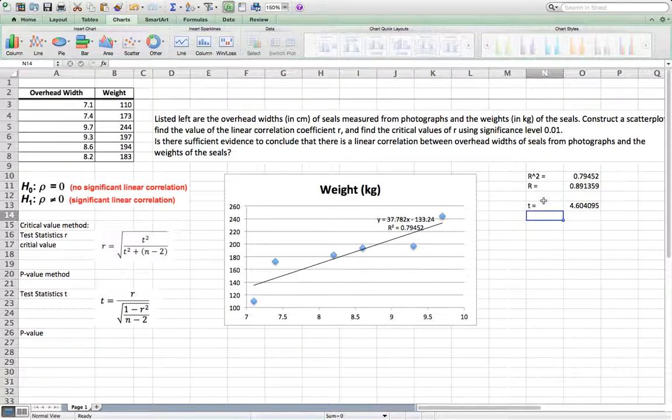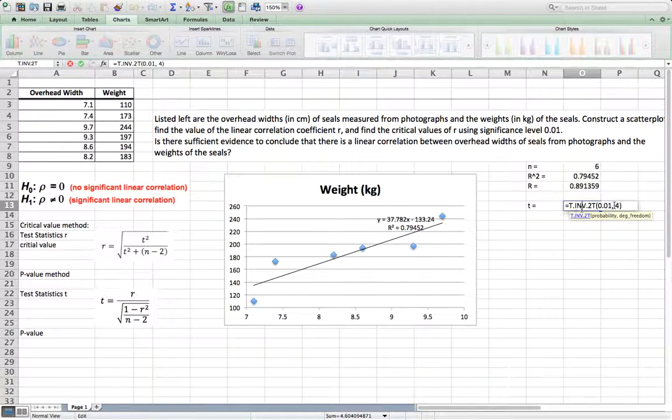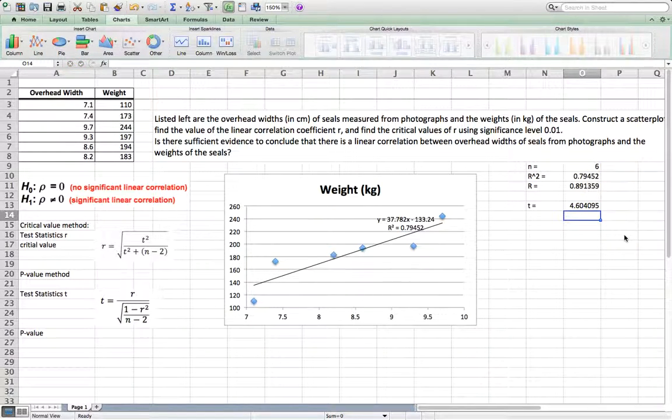Now, in order to make it more professional, maybe we can say that we let n equal 6. So then here, I change it to n minus 2, which is O9 minus 2. Well, in the future, if you change n, change all those r square, just still use the same template, can do it.